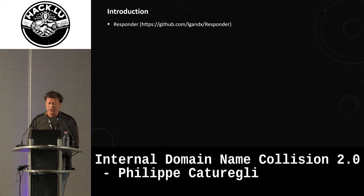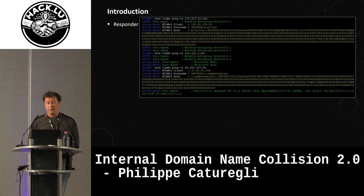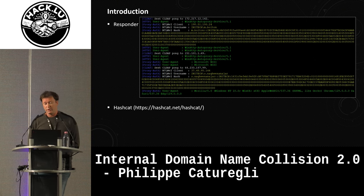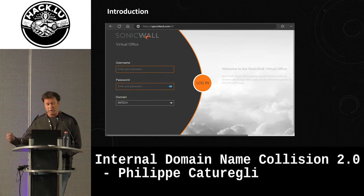We configured some DNS records to point to a server running Responder, and sure enough, within a few minutes, we collected some hashes, threw them into Hashcat, and got some domain credentials. With the domain credentials, we got onto the VPN and gained access to the internal network.